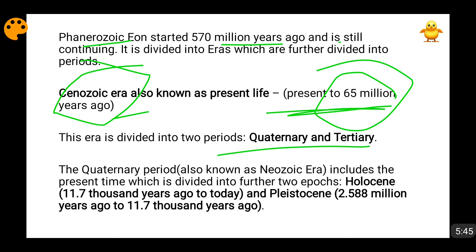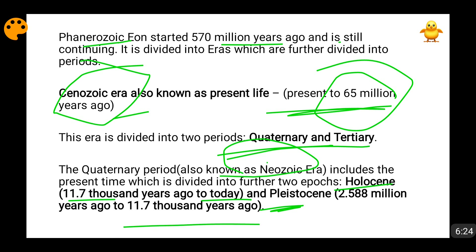In some cases, the Quaternary Period is also known as the Neozoic Era. So if someone asks what is the Neozoic Era, it is the Quaternary Period of the Cenozoic Era. This Quaternary Period is further divided into two: Pleistocene and Holocene. Holocene lies from present day to 11,700 years ago, and Pleistocene lies from 11,700 years ago to 2.588 million years ago.